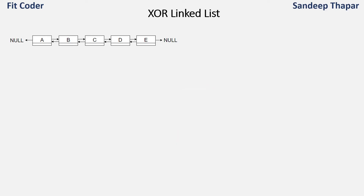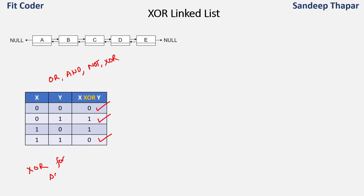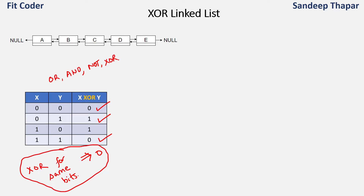Before we go into detail about how the XOR of addresses takes place, let's review what a XOR operation is. You must have studied bitwise operators like OR, NOT, and XOR. If we have two bits X and Y: if both are 0, XOR gives 0; if both are 1, XOR again gives 0; if they are different, it gives 1. So XOR for same bits gives 0. We use this property of XOR to create the XOR linked list.